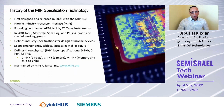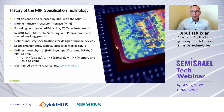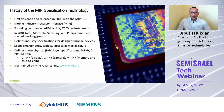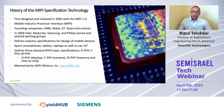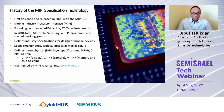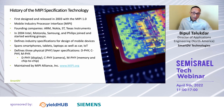First off, MIPI stands for Mobile Industry Processor Interface. MIPI Alliance was formed in 2003 by four founding companies: ARM, Nokia, SD, and Texas Instruments, and later four more companies including Intel joined. Today we have about 300 member companies, both contributing and non-contributing, included there.